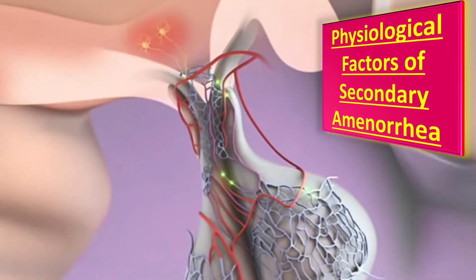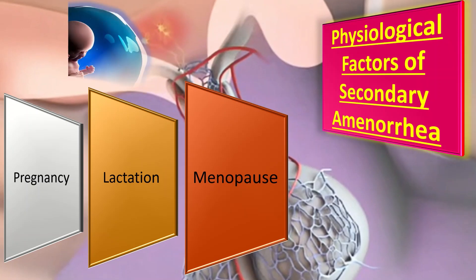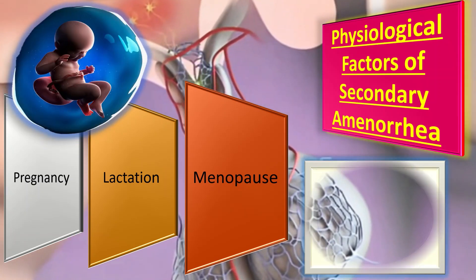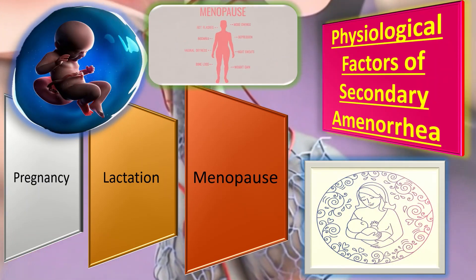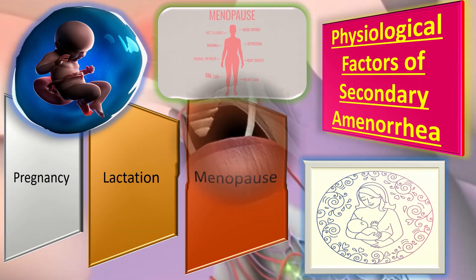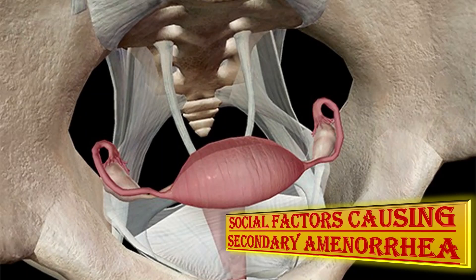What are the physiological factors responsible for secondary amenorrhea? Those include pregnancy, lactation, and menopause.